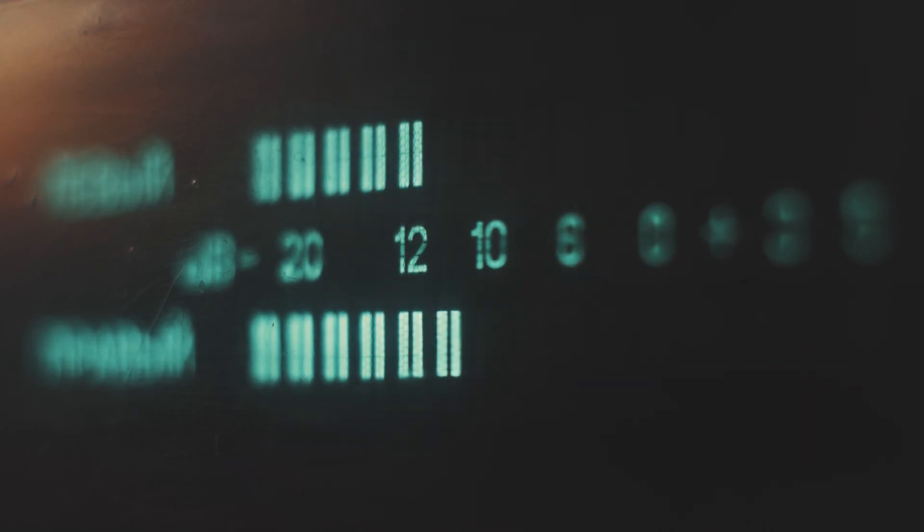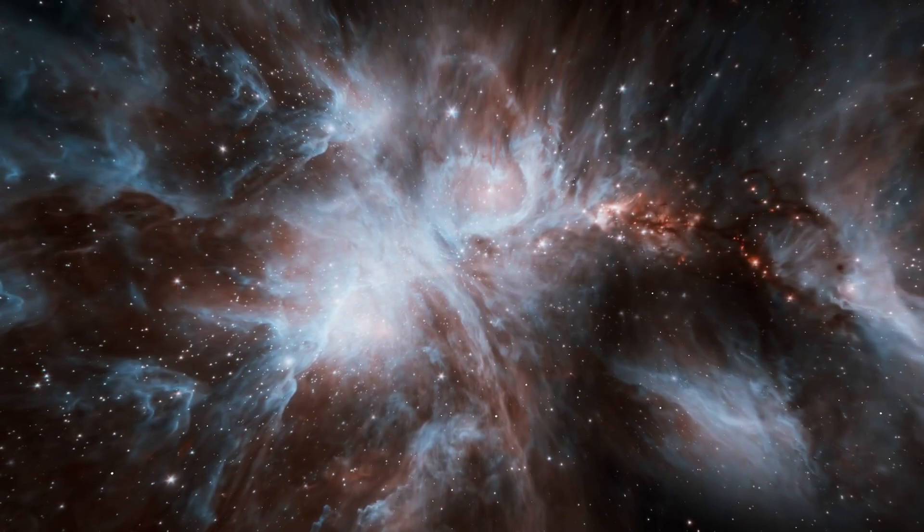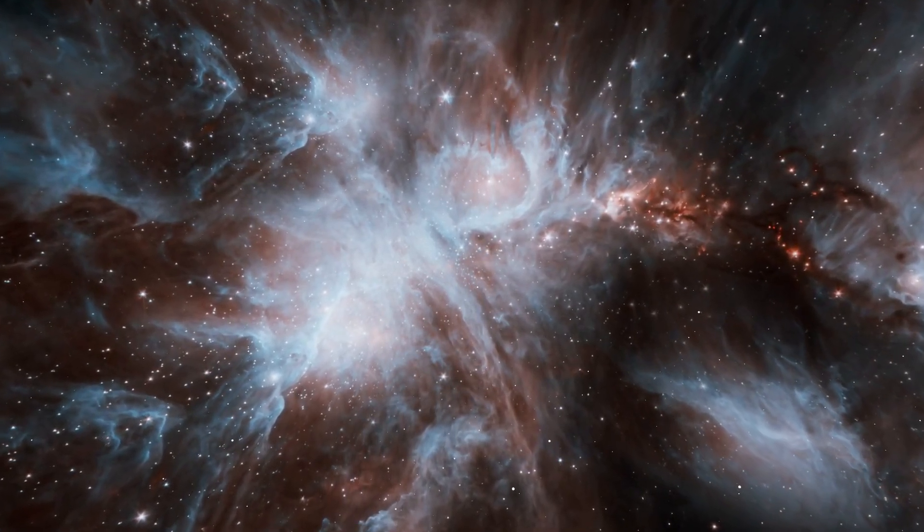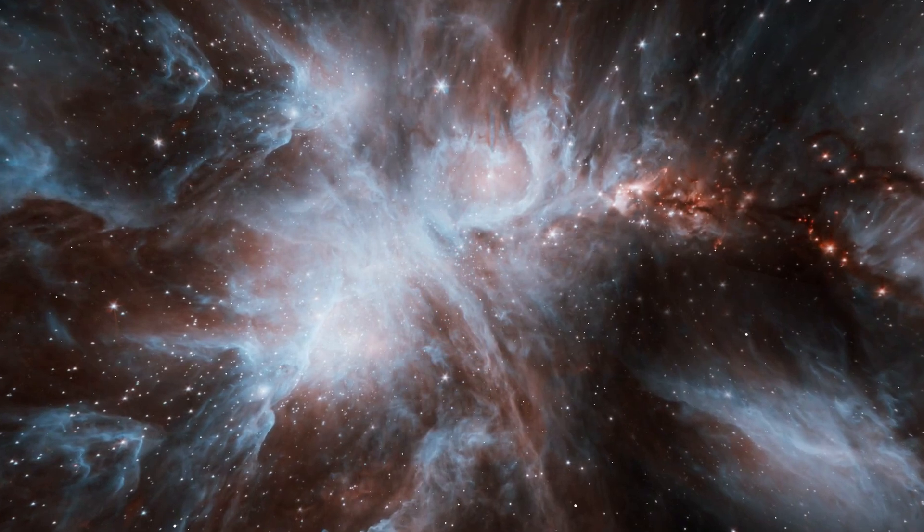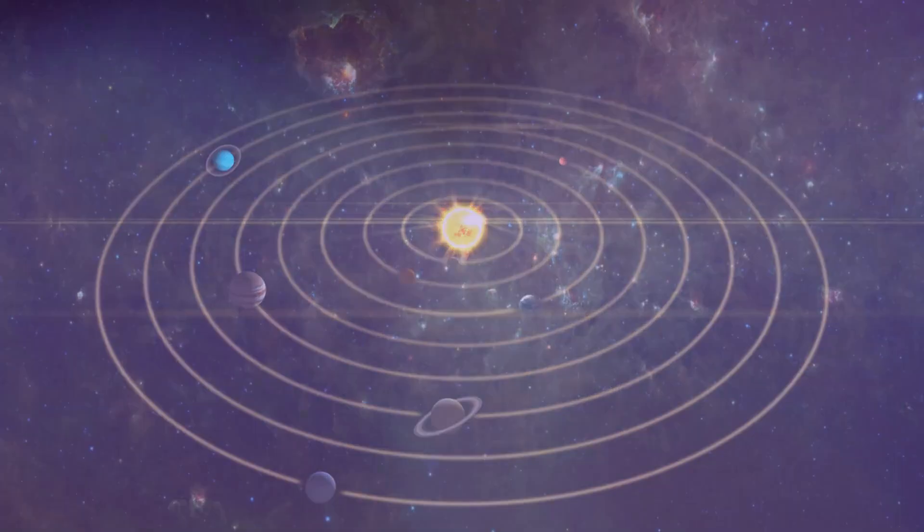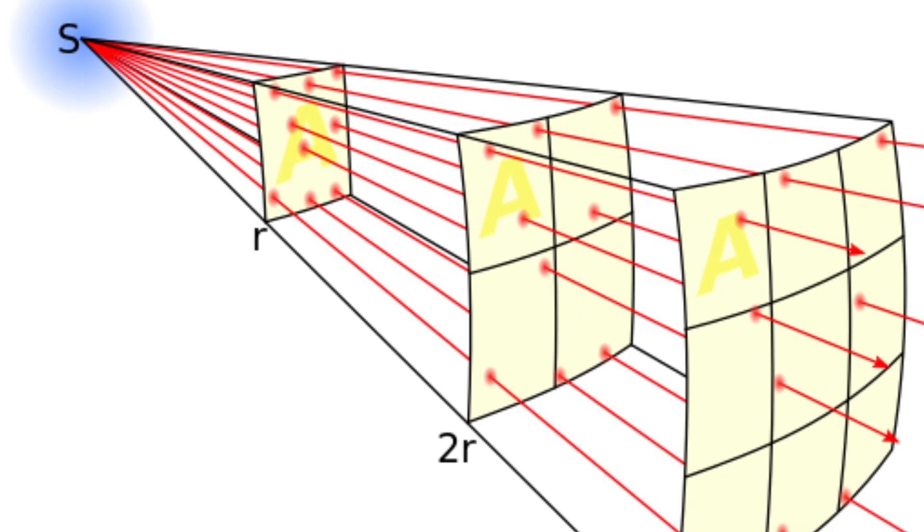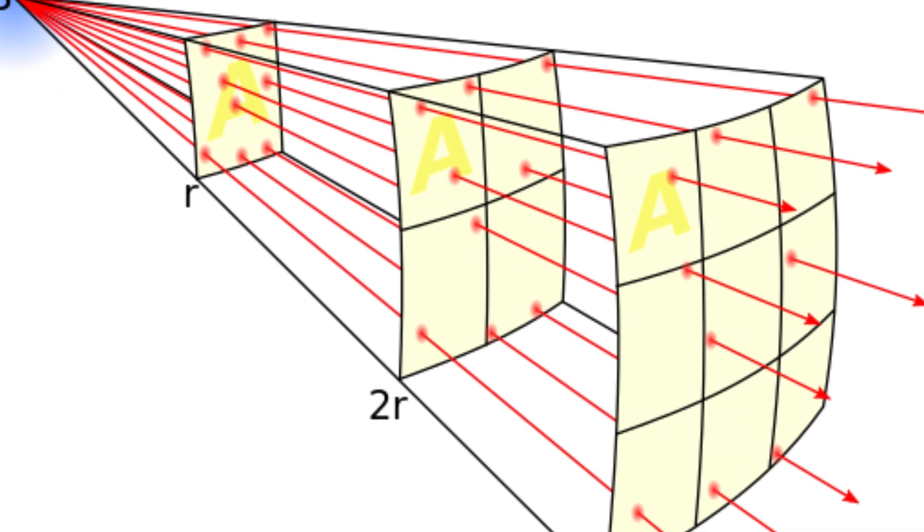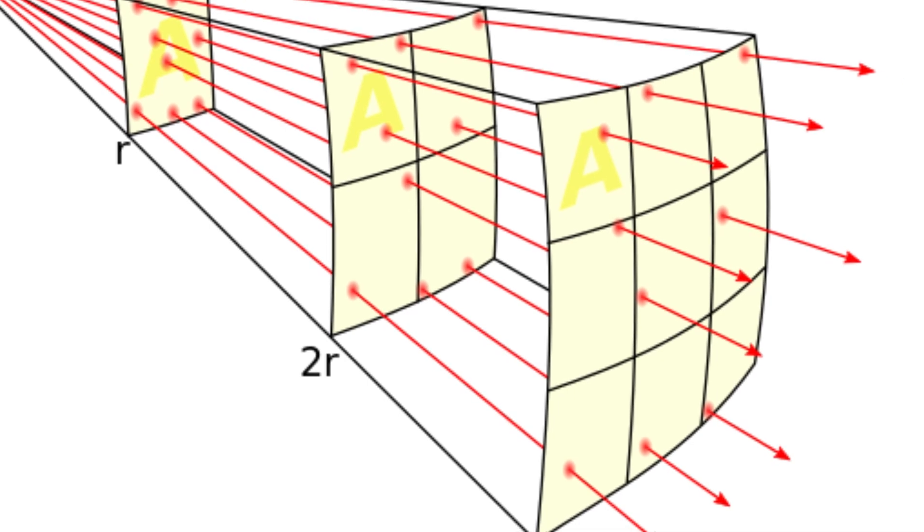Second, signal strength plays an important role in detecting these transmissions from afar. For a signal to be detectable across the vast expanse of interstellar space, it would either have to be exceptionally powerful or be aimed precisely at our solar system. General transmissions lose strength rapidly over great distances due to the inverse square law.